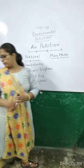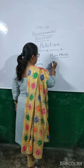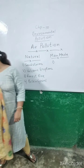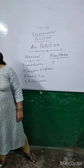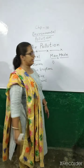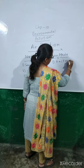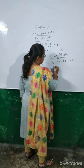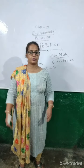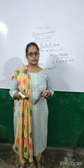Now let us come to the man-made causes of pollution. The first one — the smoke coming out of factories creates air pollution. Factories are not made naturally, they are made by us. So that is also one of the causes of air pollution.